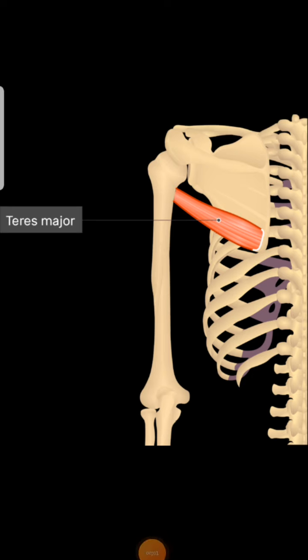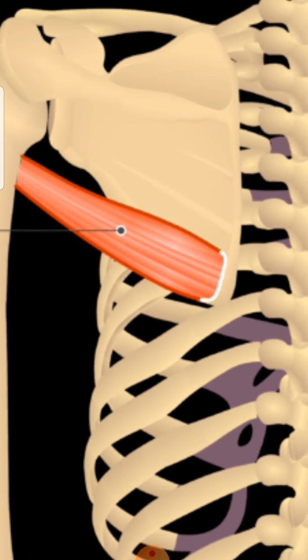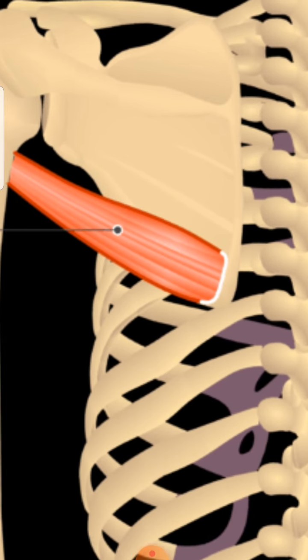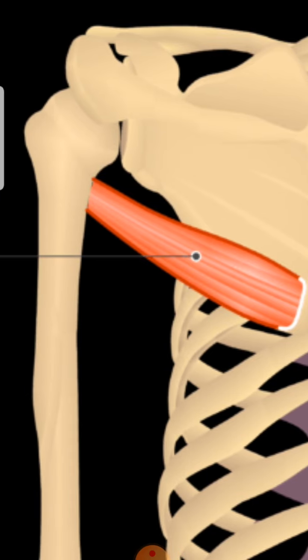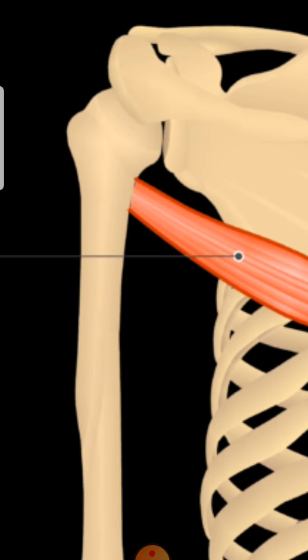In today's lecture we will be studying the muscles of the upper limb, starting from the muscles of the scapular region. We will first talk about the teres major muscle. This muscle arises from the posterior surface of the inferior scapular angle and the lower part of the lateral border of the scapula, which is your wing bone. It inserts onto the humerus at the intertubercular sulcus.